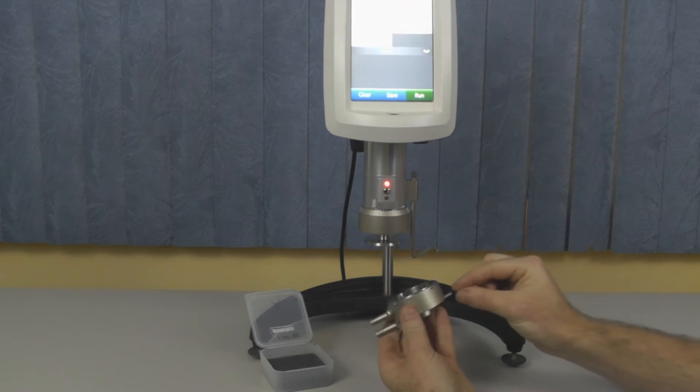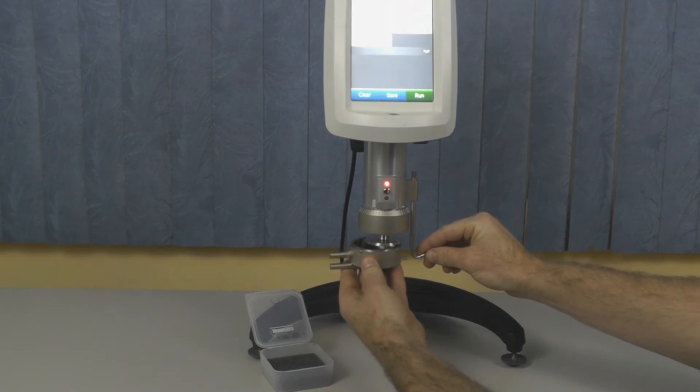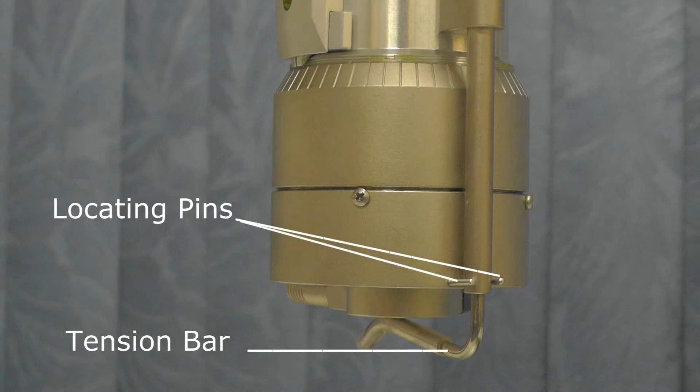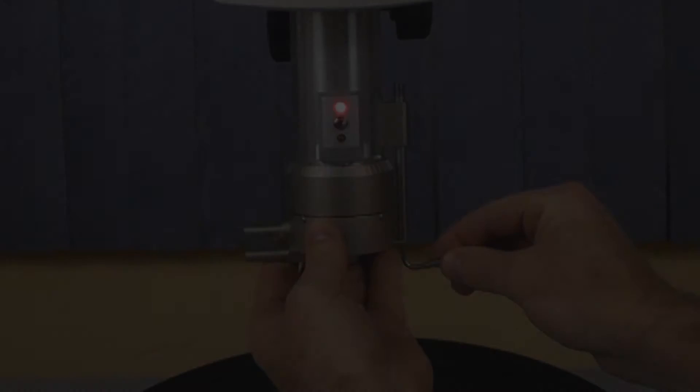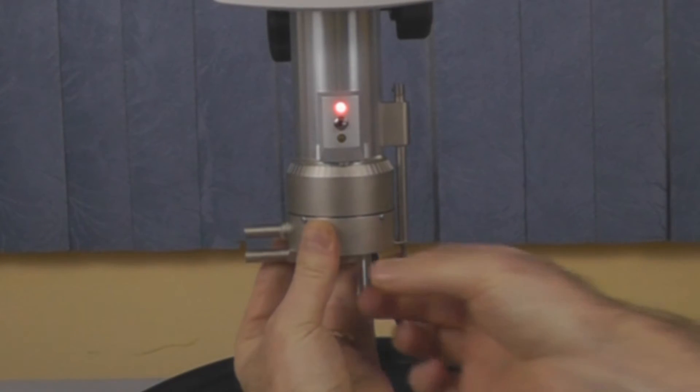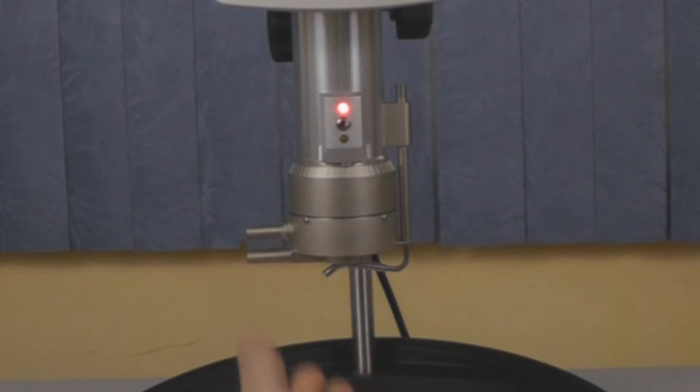You then attach the sample cup to the instrument so the two locating pins straddle the tension bar. This is to be done without any material on the sample cup. You then lock the sample cup in place by moving the tension bar under the cup.